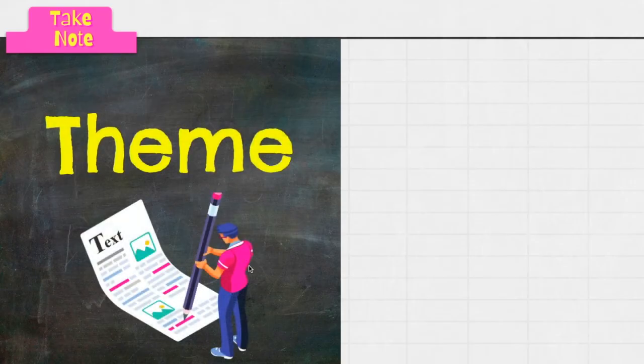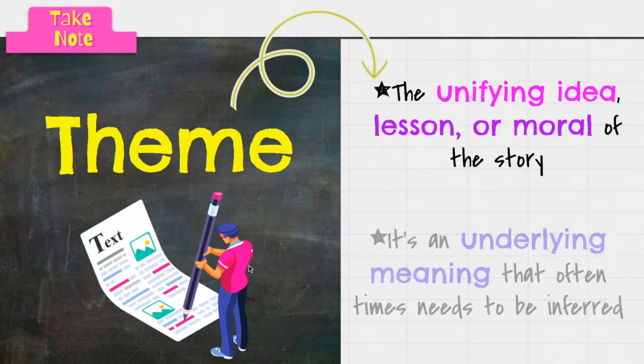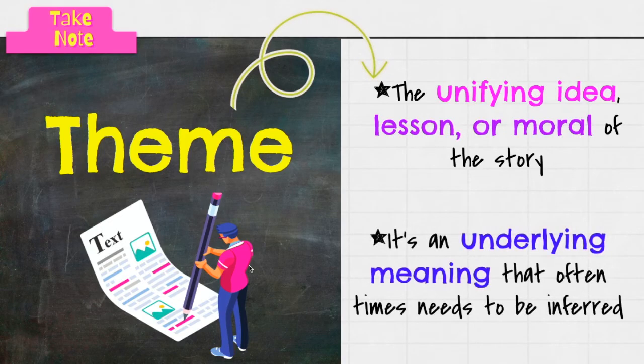Okay, finally we have theme. It's the unifying idea, lesson, or moral of the story. It's an underlying meaning that oftentimes needs to be inferred. The author's not going to come out and say, 'Hey y'all, the theme is be good to your friends.' No, you're gonna have to figure it out based on the events and the conflict and the plot.